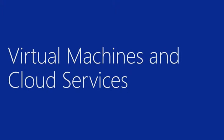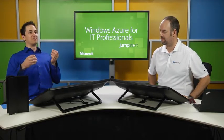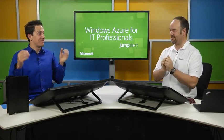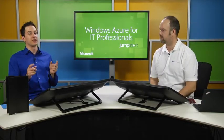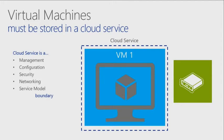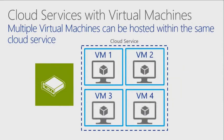Next are virtual machines and cloud services — the next building block. We've created an affinity group, a virtual network, and a storage account. Virtual machines must be installed inside a cloud service. A cloud service is a logical management boundary, and from an IT perspective, you get one public IP address per cloud service. You can have multiple VMs inside the same cloud service.